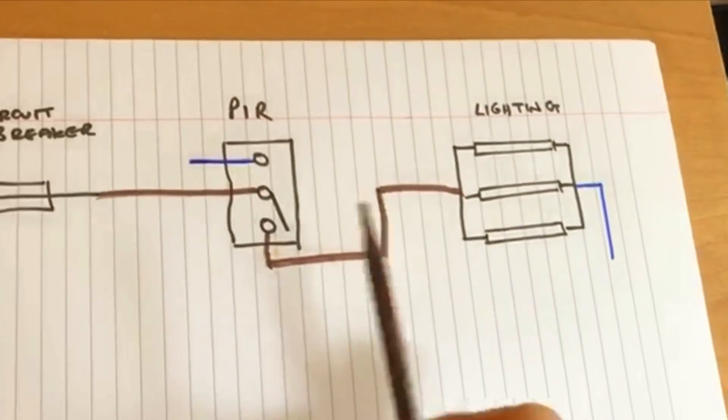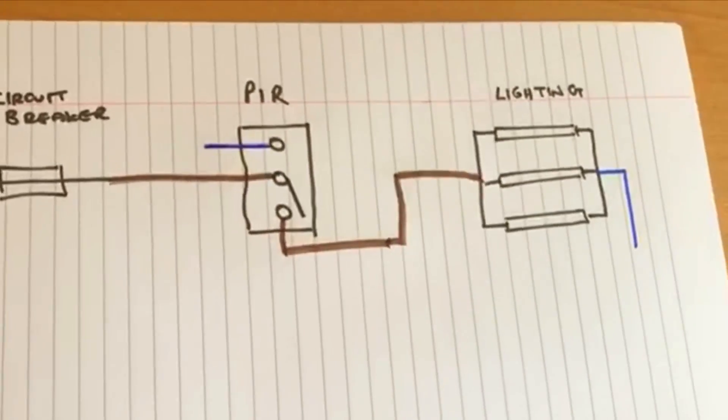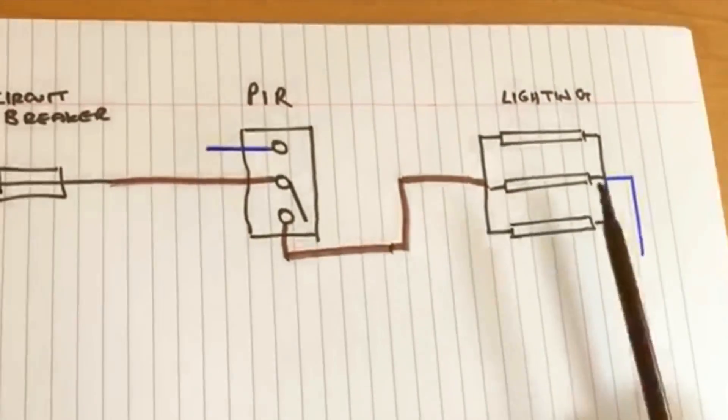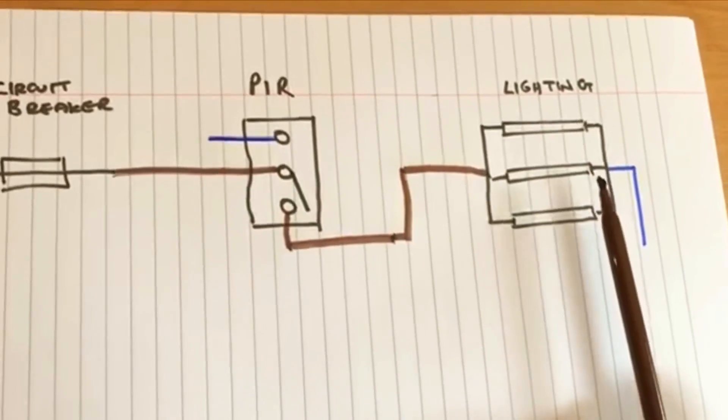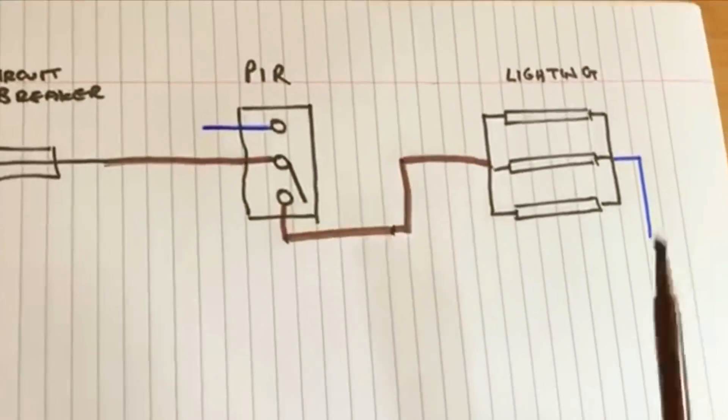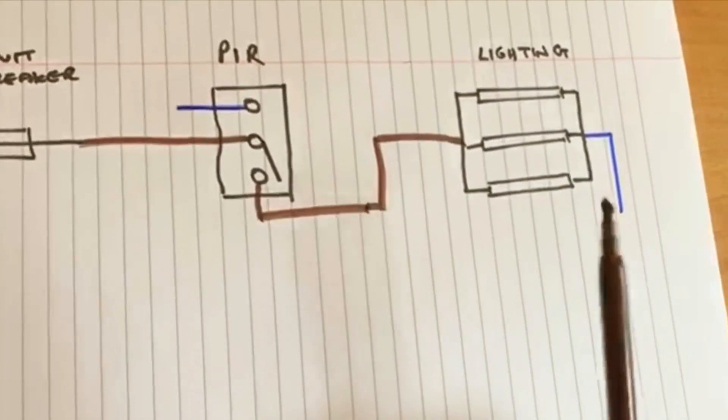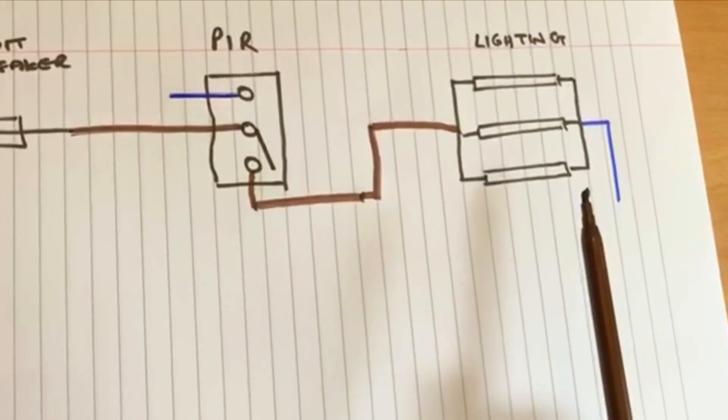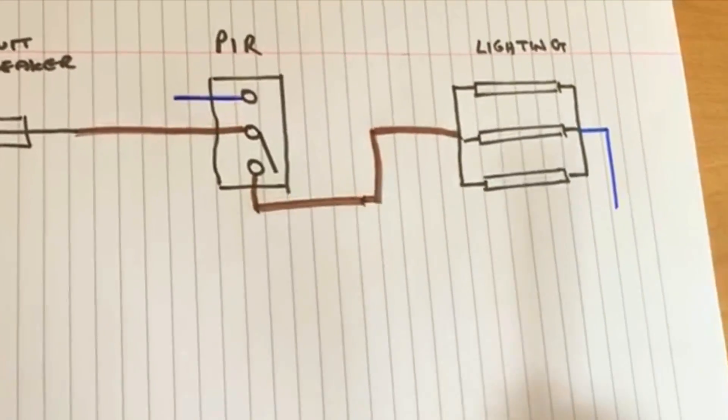Remember the PIR has got electronic equipment inside, so the more lights you have, the more load is being switched through the PIR. So it's not really a great idea to have too many lights or too much load on the PIR.